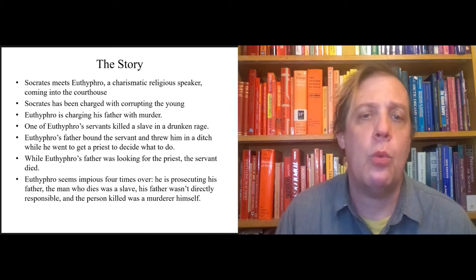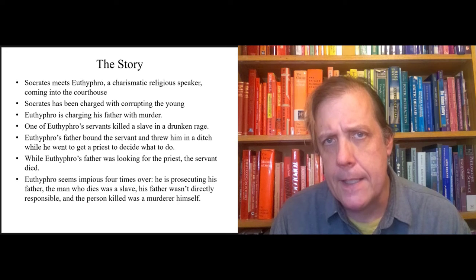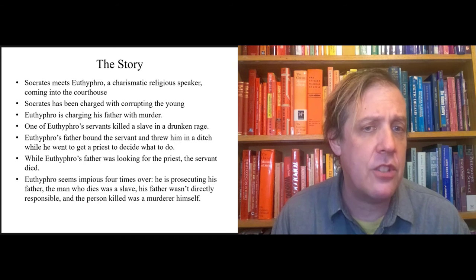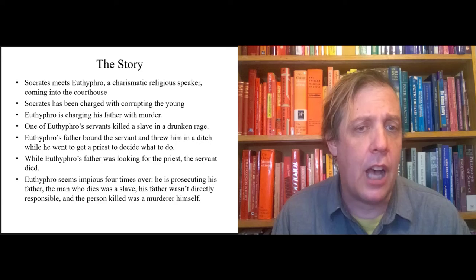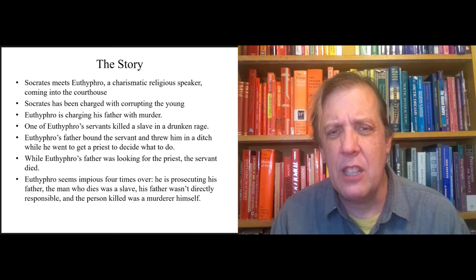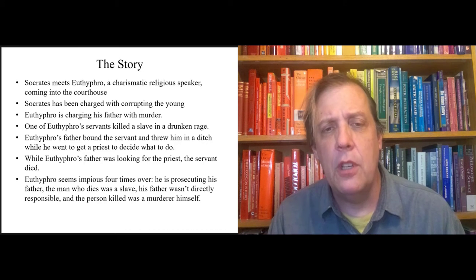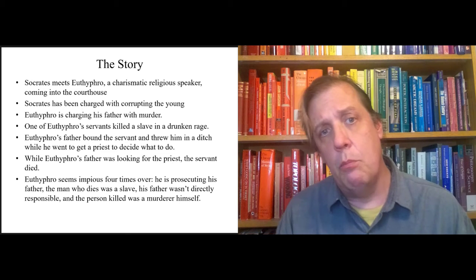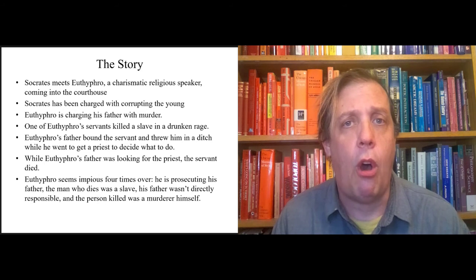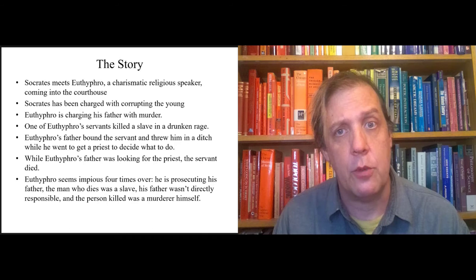The backstory is complicated and kind of outlandish. One of Euthyphro's servants killed a slave in a drunken rage. Euthyphro's father bound the servant and threw him in a ditch while he went to get a priest to decide what to do. While Euthyphro's father was looking for the priest, the servant died.